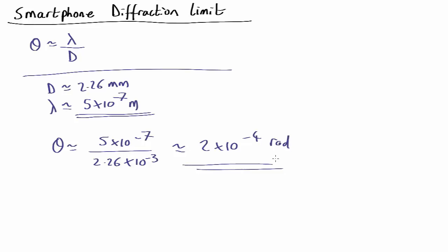This is exactly the same as the limit caused by the pixel size. Of course, it's not a coincidence. What this is telling us is that the wave nature of visible light going through a rather small lens is going to spread the light out.